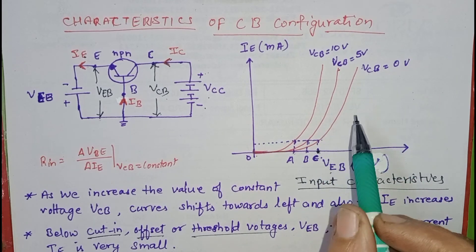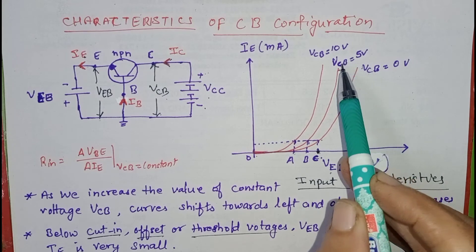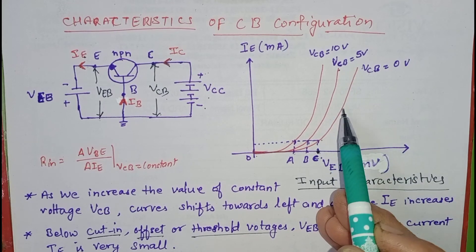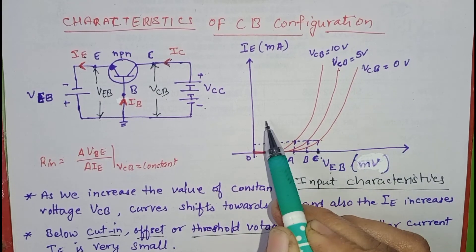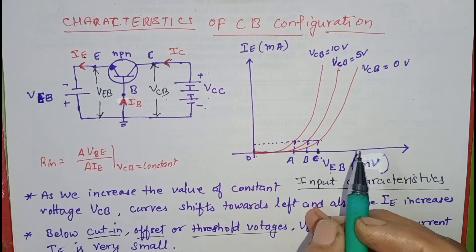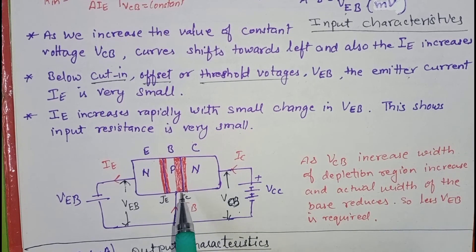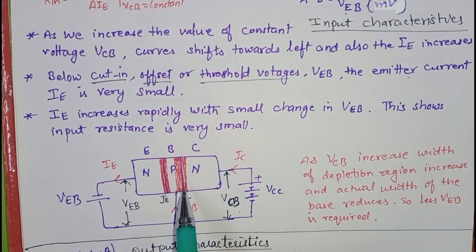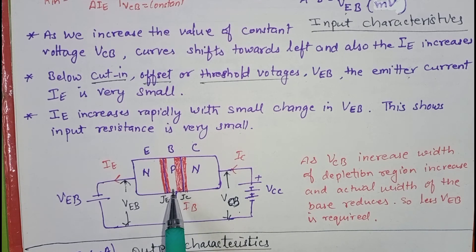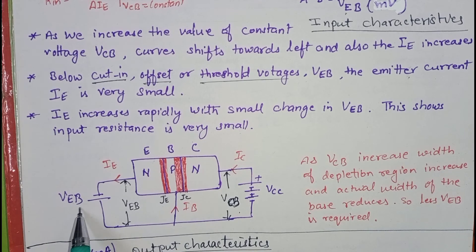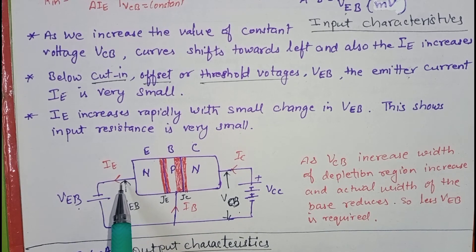By observing the curve, we can see when we increase the fixed value of VCB, there is a shift of curves towards the left side and also the IE increases. This is due to the fact that when we increase VCB, the reverse biasing is increased and the width of depletion region at the collector junction increases. So the increase of depletion region width reduces the actual width of the base region, and less voltage of VEB is required for the flow of current IE.